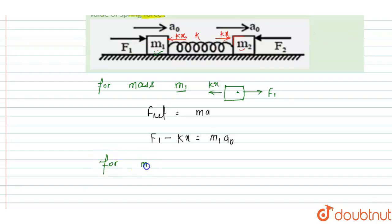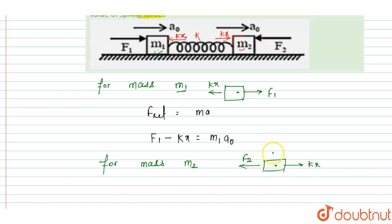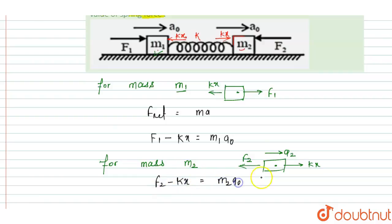For mass M2, F2 is acting in this direction and Kx is acting in the opposite direction. Applying Newton's second law, F2 minus Kx equals M2 into A0. This is Equation 2.